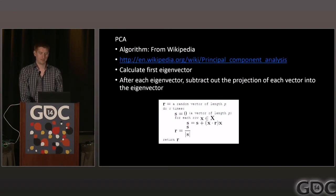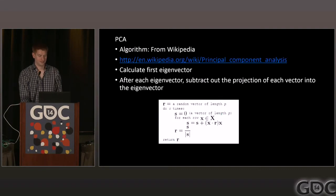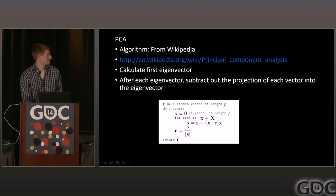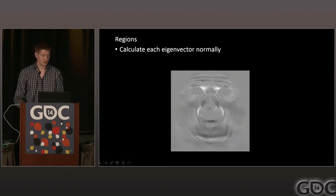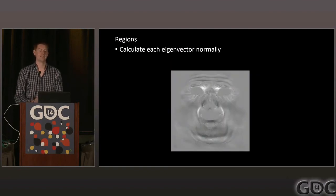Go to Wikipedia, find the algorithm, and do it — it's pretty simple. Then you can calculate these eigenvectors. But there's a problem: you can only apply one weight to the entire image, which makes it hard to extract what you actually want from each individual expression.